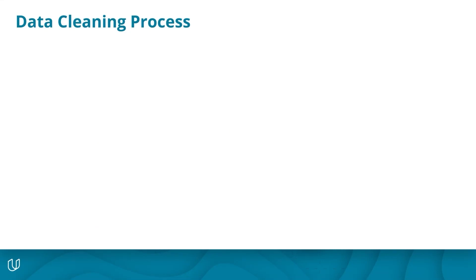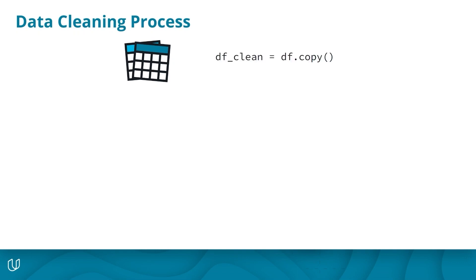Experts typically approach data cleaning by following a three-step process. Before kickstarting this process, it's critical to make a copy of your original dataset. All of the cleaning operations are typically conducted on the copy, so you can still view the original dirty and/or messy dataset later. If you're working with data frames and pandas, you can do this by using the copy method on your data frame and assigning it to a variable — for example, dfclean.